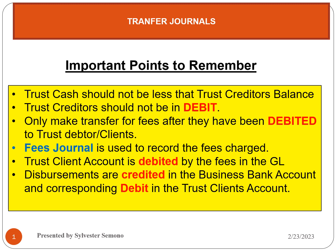The trust cash should not be less than the trust creditors. When you receive money from your clients, that money must be separated and recorded into trust records. In the trust records, there is a general ledger account called the trust creditor. The trust creditor account is used to record all amounts received from clients.